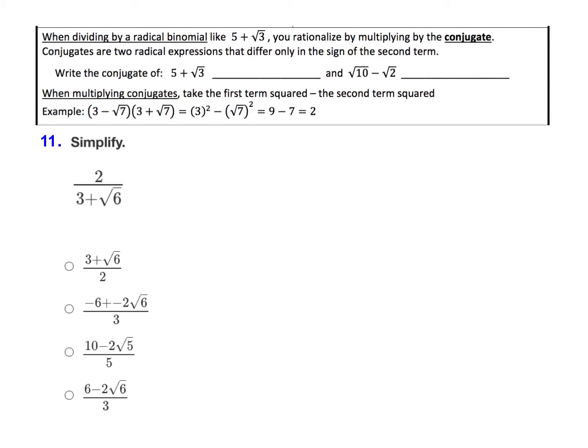For the last question here, we are going to actually do the divide by the binomial and we need to rationalize that denominator. So remember, to rationalize the denominator when you're dividing by a binomial, you need to multiply it by the conjugate. So the conjugate of 3 plus root 6 would be 3 minus root 6.